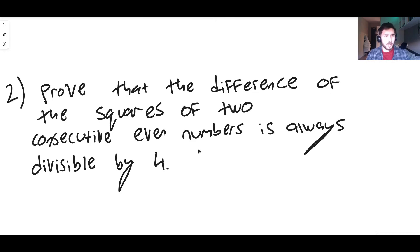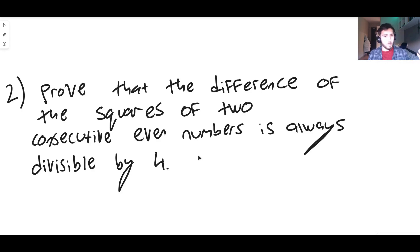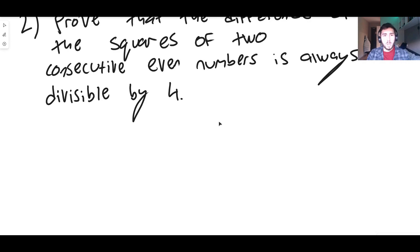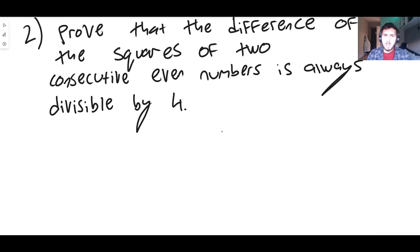Here's the second question: prove that the difference of the squares of two consecutive even numbers is always divisible by 4. So take any even number, square it, then take the next consecutive even number — like 6 and 8, or 22 and 24 — square that too, and the difference between those squares is always divisible by 4. We only need even numbers for this proof.